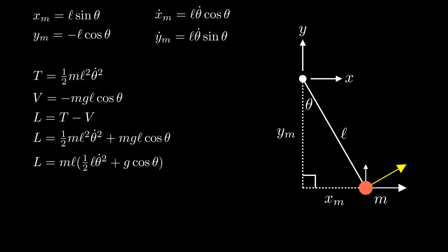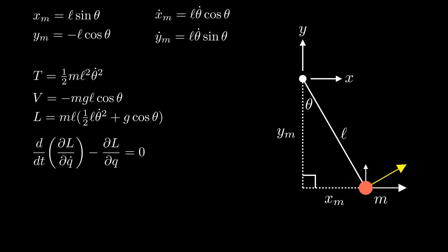Now that we have L, we can plug into the Euler-Lagrange equation. If you look up the Euler-Lagrange equation in a textbook, it will have all these q's. The q is just referring to your particular coordinate system. In our case, it's just theta, because we can describe the position of the pendulum in terms of theta.